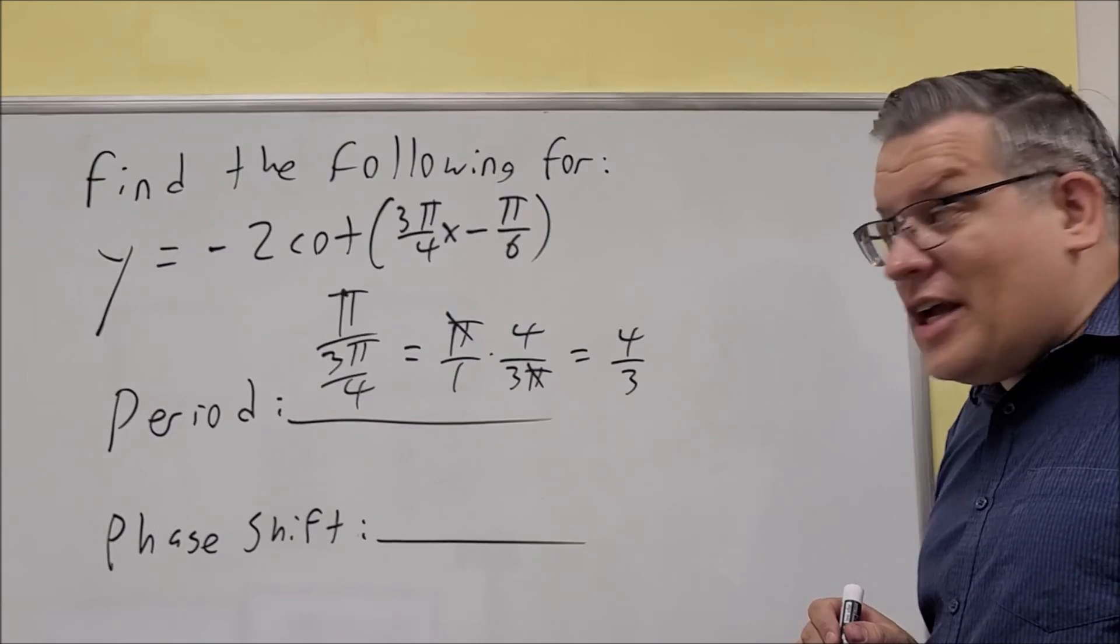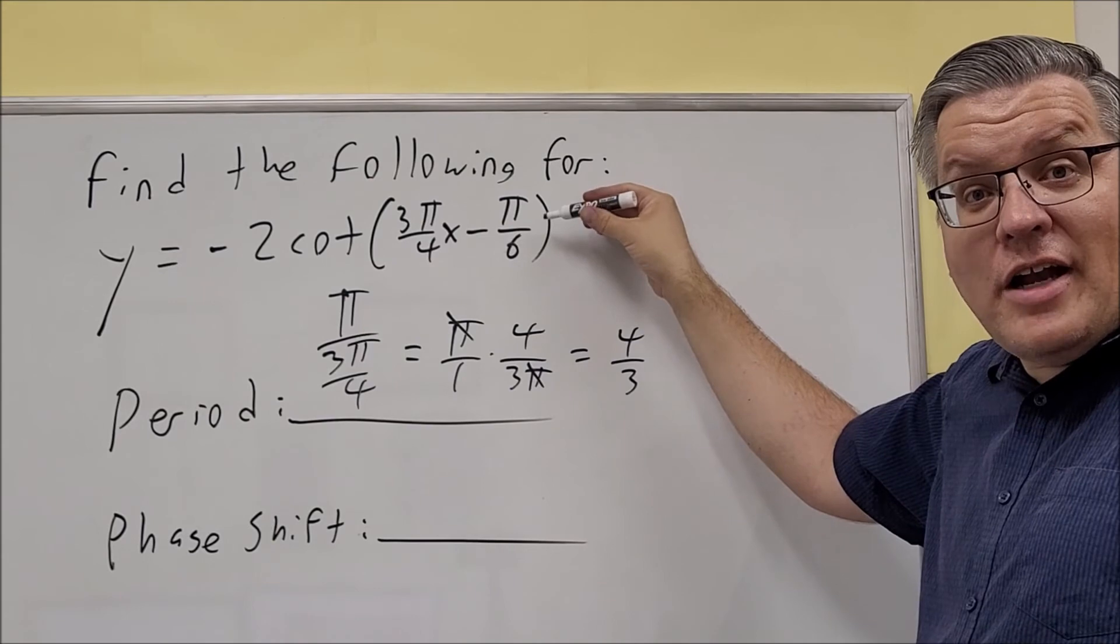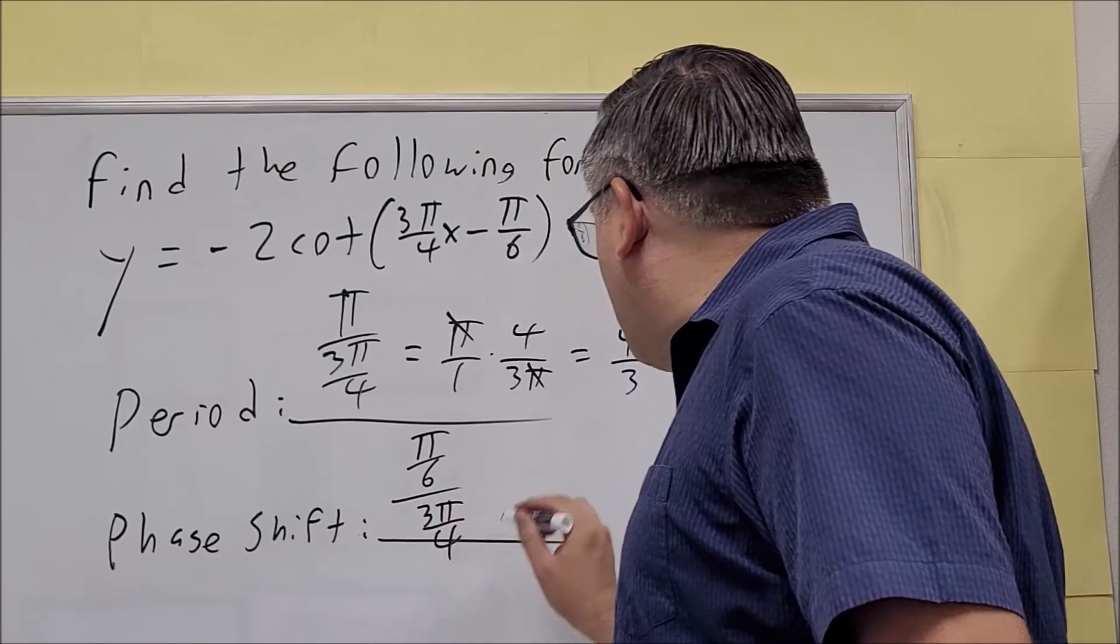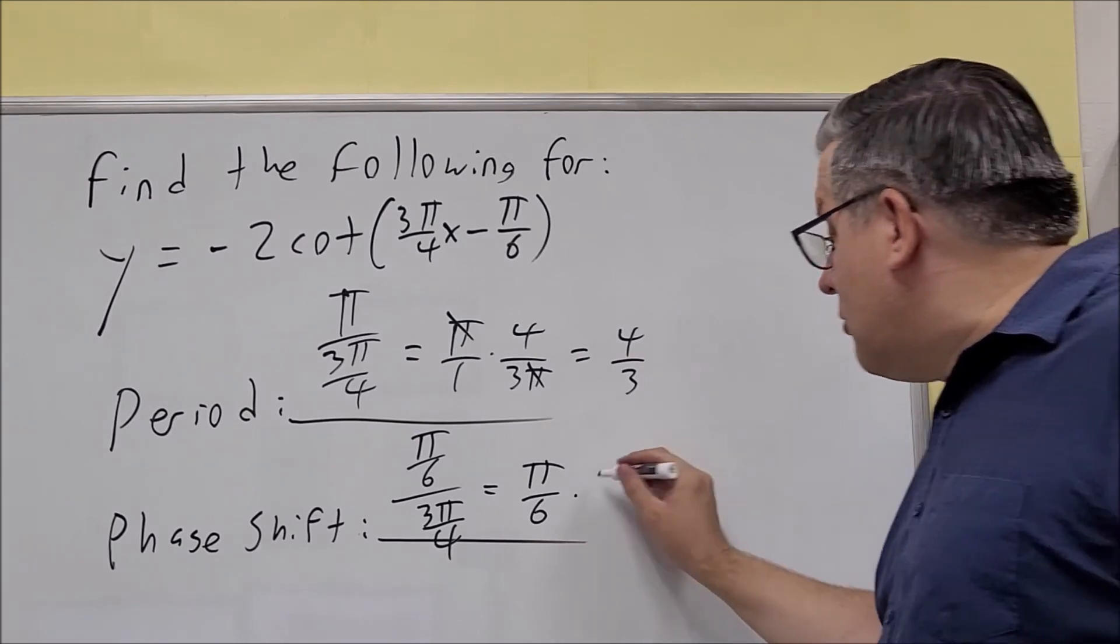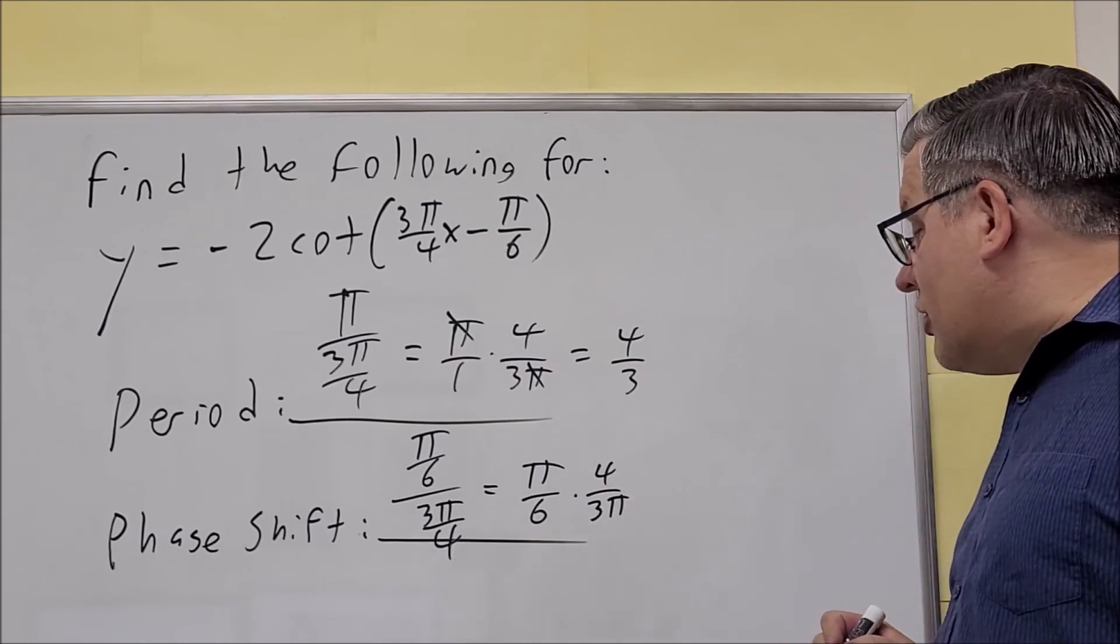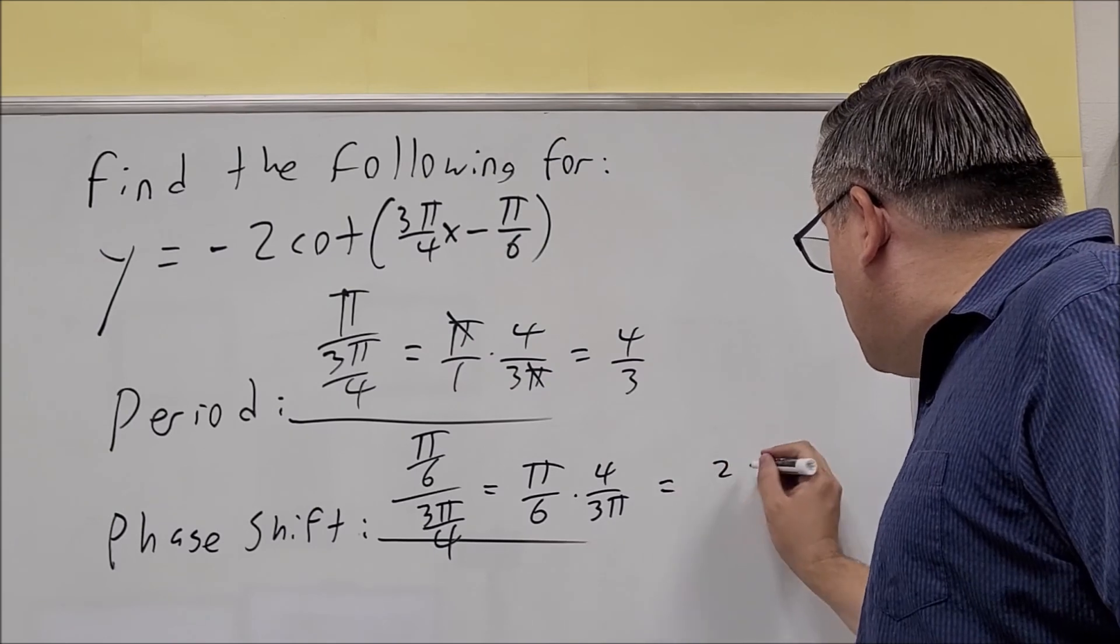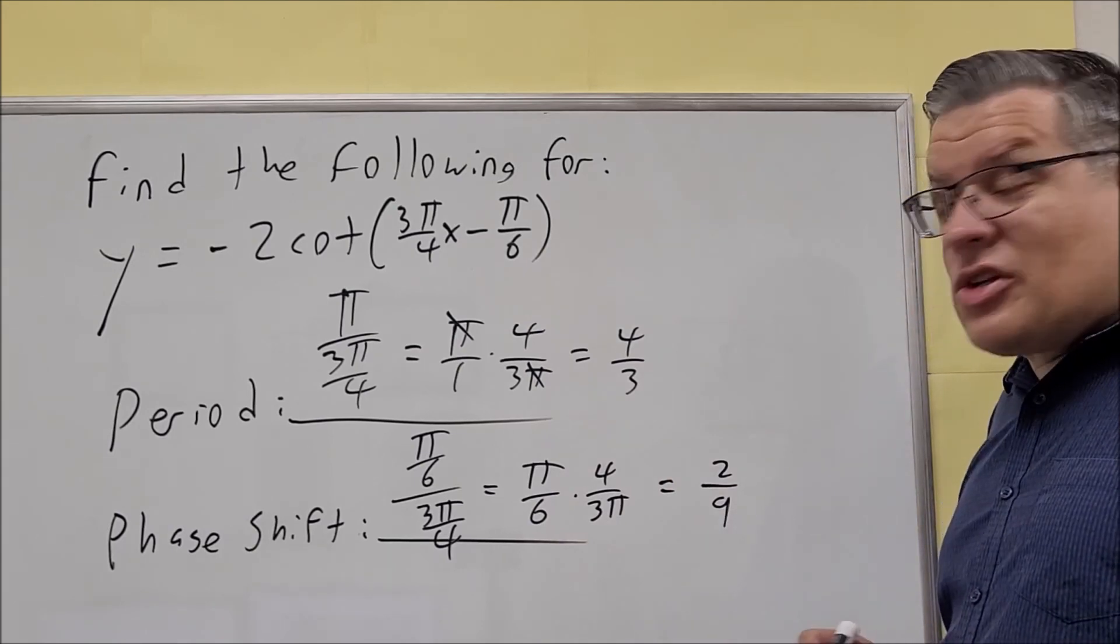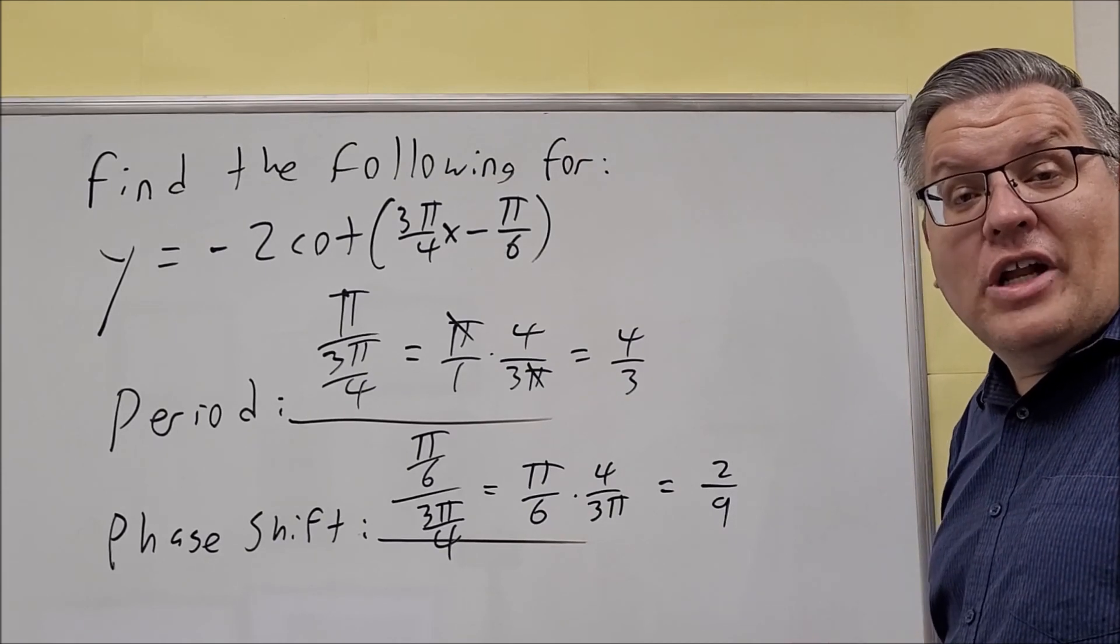For the phase shift, you're going to take the, it's c over b, so you're going to take the opposite sign of c over b. So because there's a minus here, we're going to do positive π over 6 divided by the 3π over 4 down below. And then we're going to flip and multiply once again. So π over 6 times 4 over 3π. The π's are going to cancel out. We can also reduce this as well. Take a 2 out of the top and bottom, and we're going to get 2 ninths as the answer. The π's again are going to be gone, so in this case we get a whole number of answers for these, and there's not going to be any π's in our answer for the period and the phase shift.